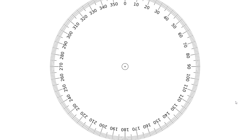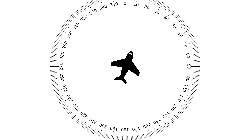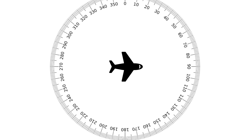If you're unfamiliar with what a heading or a vector is, just imagine a circle — it has 360 degrees all around. Now imagine an aircraft in the middle of that circle. The controller told the pilot to fly heading 090, so 090 is this way. Just a quick explanation of what that is, but let's continue.